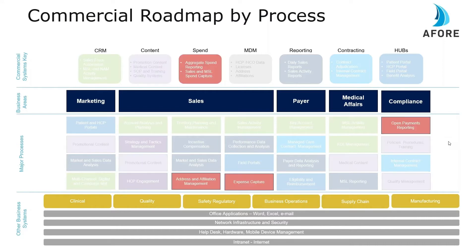When people are out in the field, they're spending money, and with regulations at the federal, state, and global level, there are significant needs to ensure accurate reporting. That starts with having identifiers and good data. You want to make sure you have HCP and HCO lists, license identifiers, addresses, and affiliations — all linked to your expense capture system, with the majority of the industry using Concur. All that data must then be shared into your Open Payments system, reporting spend data at the federal, state, or international level. Having your spend system as part of your infrastructure is critically important.